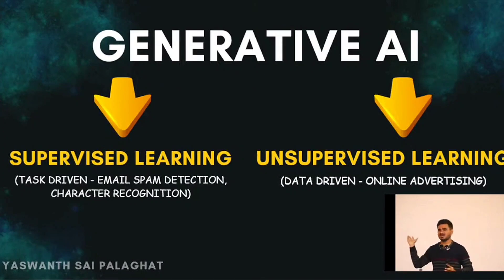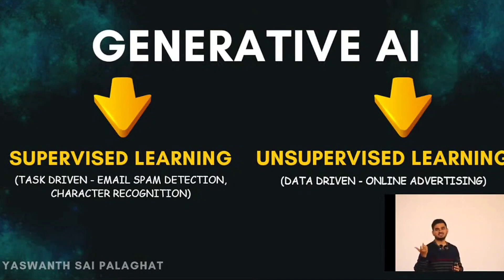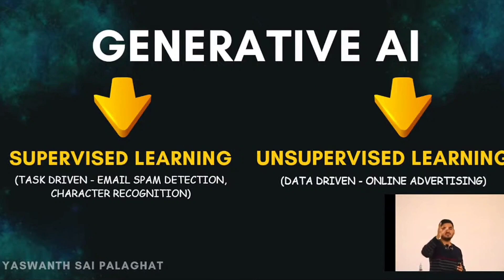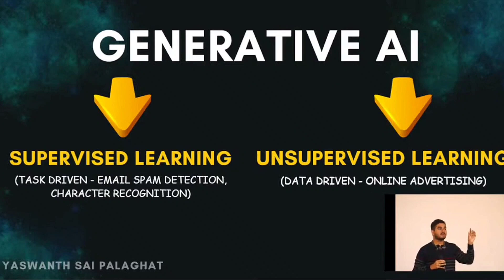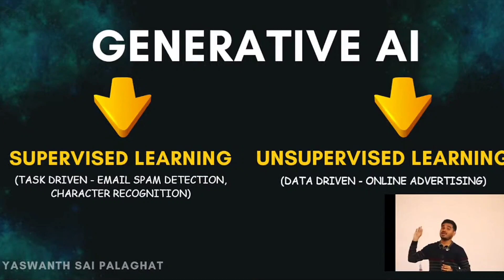There are many different examples — even image recognition. You have Google Lens. If you scan some object, it will give you similar Google searches, because Google knows that if you show an apple to Google Lens, it has been trained that an apple looks like this, so it will give you similar searches. That is what supervised learning can do. But supervised learning needs guidance.